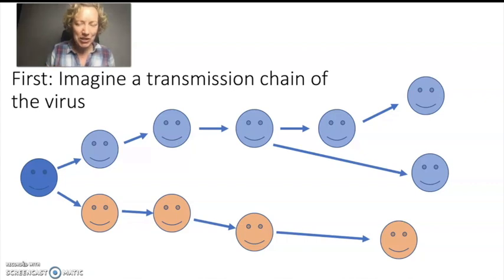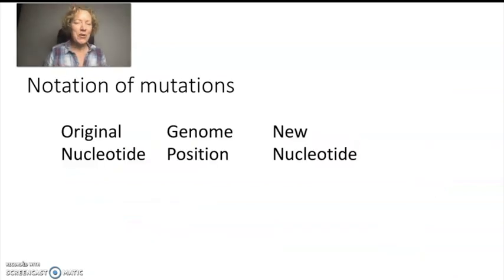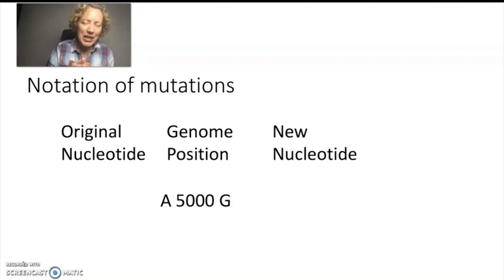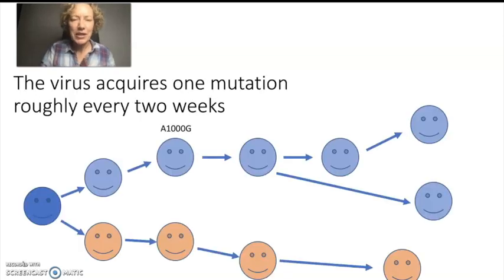So let's add some mutations to this transmission chain, but I'll show you first something about the notation of mutations. So what we usually do for the notation of mutations is that we write the original nucleotide, then we write the genome position, and then we write the new nucleotide. So the original nucleotide may be an A or C or G or T. And then the genome position can be any number, in this case between one and about 30,000 because that's the length of the coronavirus genome. So for example, you can have an A5000G mutation, which means that at position 5000, originally there was an A, but now the virus has a G at this position.